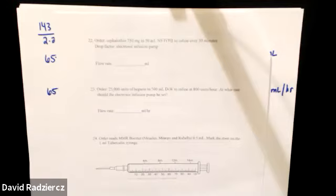Microtubing is 60 drops per milliliter, whereas macrotubing can be 10, 15, or 20 drops per milliliter. You're probably right that we just need to calculate milliliters per hour here.